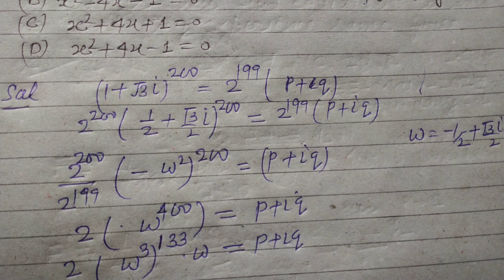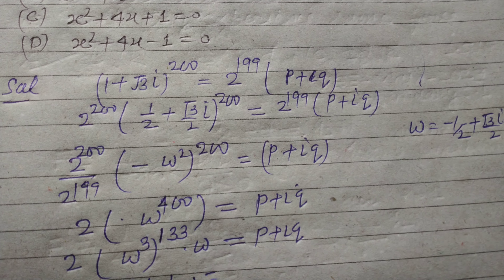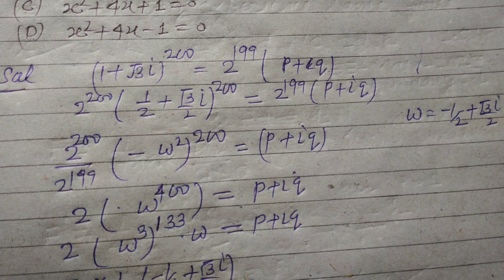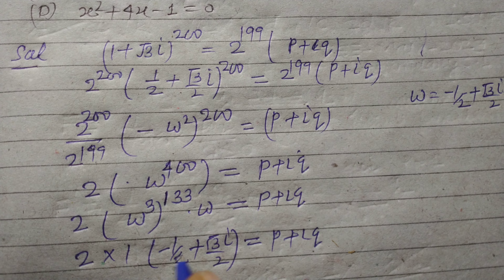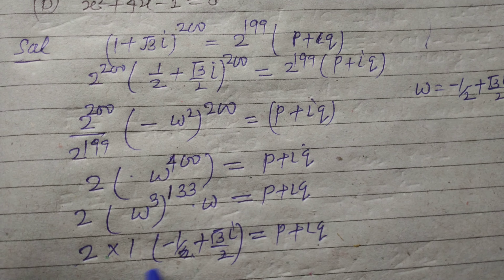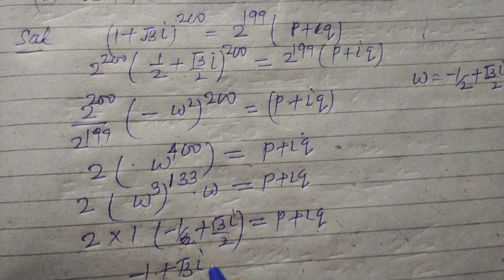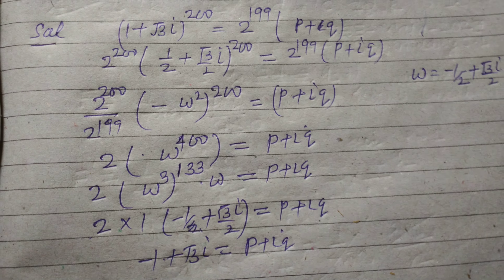So this is 2, and we write ω = -1/2 + (√3/2)·i. Multiplying by 2, the 2 cancels and we get -1 + √3·i equals p + i·q. Therefore p = -1 and q = √3.